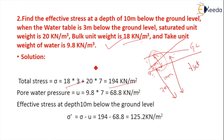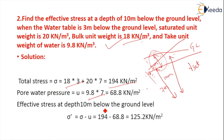Pore water pressure U is calculated from the water table level. The water level starts from 3 meters below ground, so the saturated depth is 7 meters. U = 7 × 9.8 = 68.4 kN per meter square. Therefore effective stress sigma dash = sigma minus U = 194 minus 68.8 = 125.2 kN per meter square.